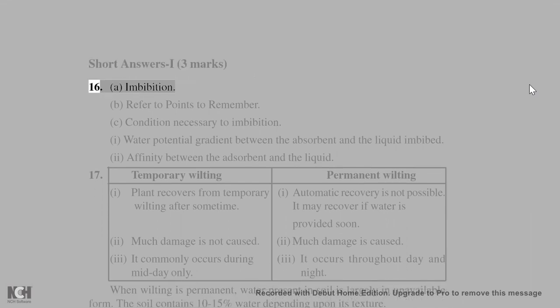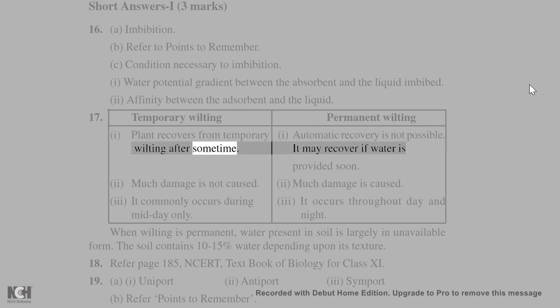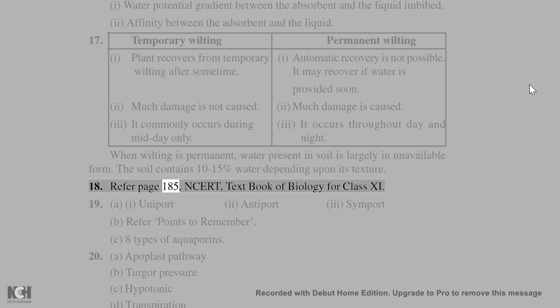Short answers, 3 marks. 16. A. Imbibition. B. Refer to points to remember. C. Condition necessary to imbibition: 1. Water potential gradient between the absorbent and the liquid imbibed. 2. Affinity between the adsorbent and the liquid. 17. Temporary wilting vs permanent wilting. 1. Plant recovers from temporary. 1. Automatic recovery is not possible. Wilting after some time. It may recover if water is provided soon. 2. Much damage is not caused. 2. Much damage is caused. 3. It commonly occurs during. 3. It occurs throughout day and midday only. Night. When wilting is permanent, water present in soil is largely in unavailable form. The soil contains 10-15% water depending upon its texture.